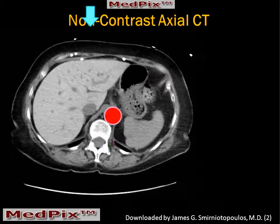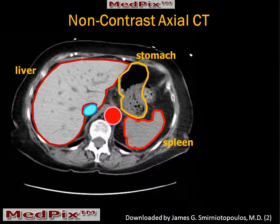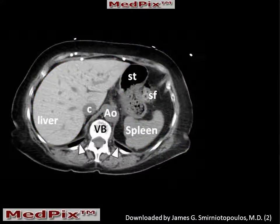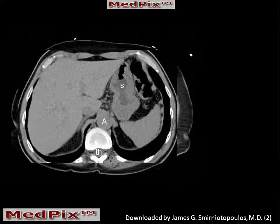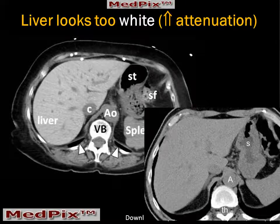This is a representative section from the upper abdomen of her non-contrast CT scan. We can see the abdominal aorta, the inferior vena cava, the liver, the stomach with some food contents, and the spleen. Normally, the liver is slightly hyperdense or hyperattenuating — whiter than the muscles and the spleen on a non-contrast CT scan. But comparing this patient's scan, we can see that the liver looks way too white. The attenuation seems to be way too high.